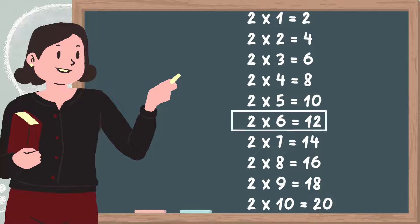Two six are twelve, two sevens are fourteen, two eights are sixteen, two nines are eighteen, two tens are twenty.